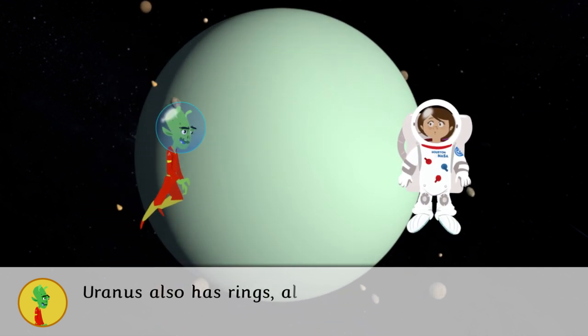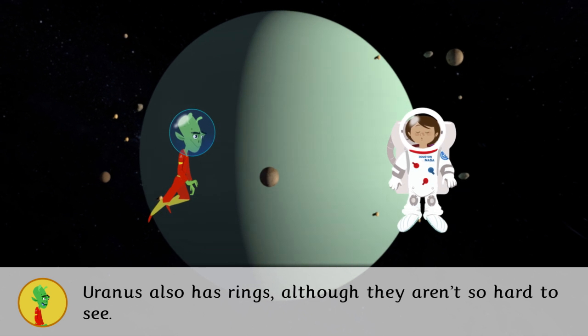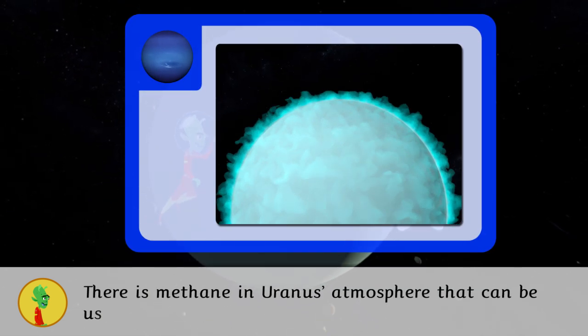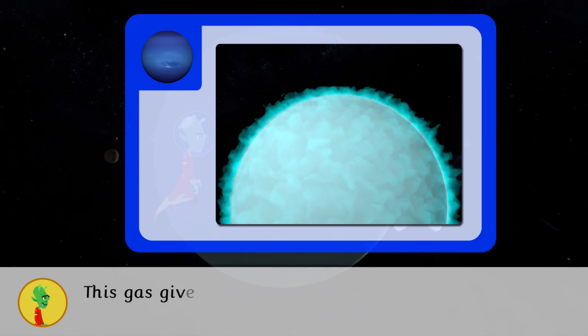Uranus also has rings, although they are hard to see. There is methane in Uranus' atmosphere that can be used as fuel. This gas gives it its blue color.